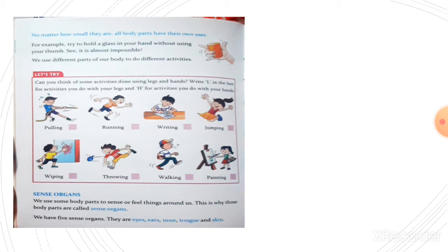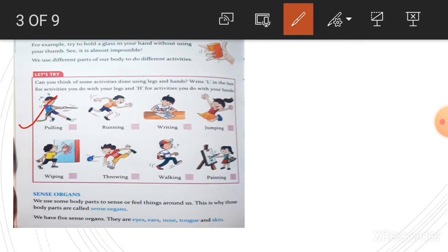Look at the pictures. First one is pulling. For pulling we use hands, so write H in the given box. Next, running. We use our legs for running, so write L. Next, writing. We use our hand, so H. And then jumping. We use our legs when we jump, so write L. In this way, write H or L for the given pictures below.